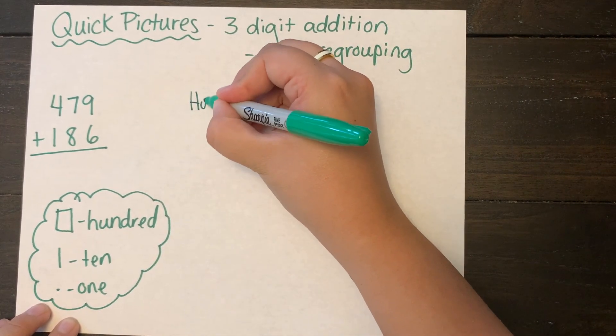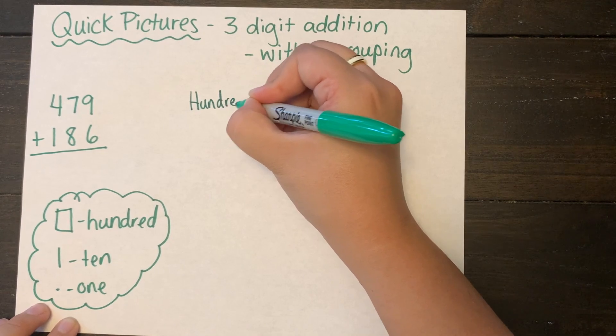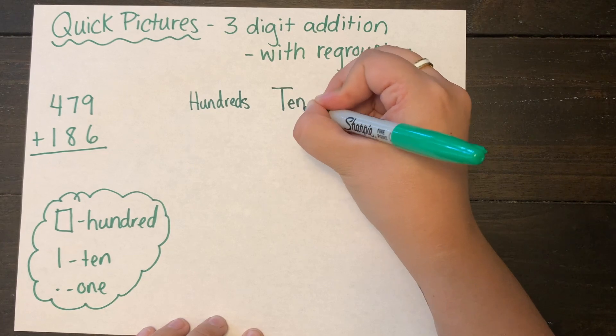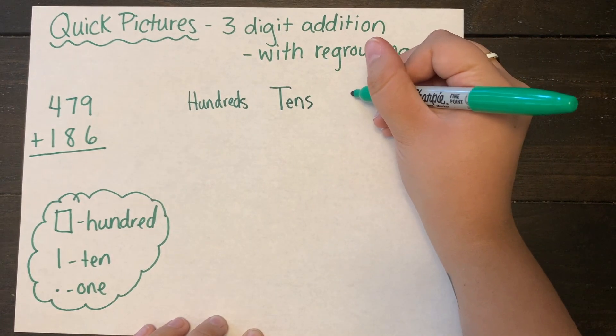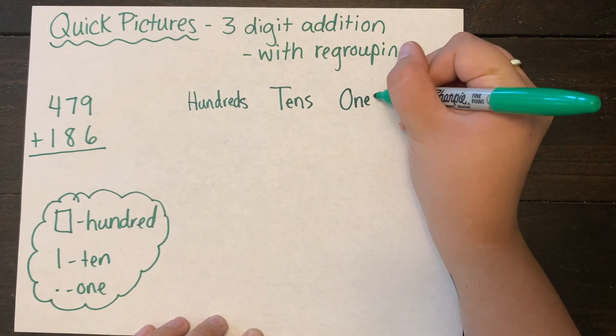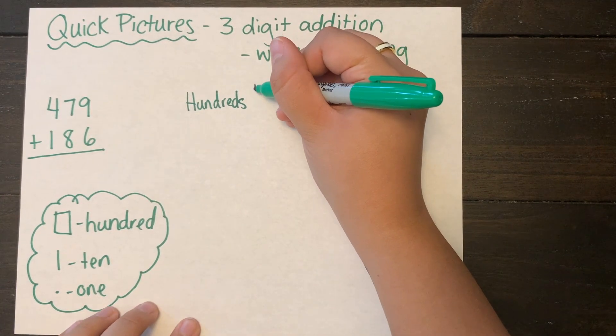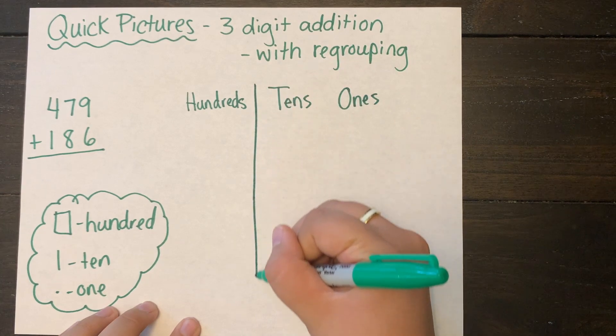I'm going to go ahead and draw our place value chart labeling it hundreds, tens, and ones, with the numbers increasing going right to left. Now because this is an addition problem we are going to be drawing both addends today.